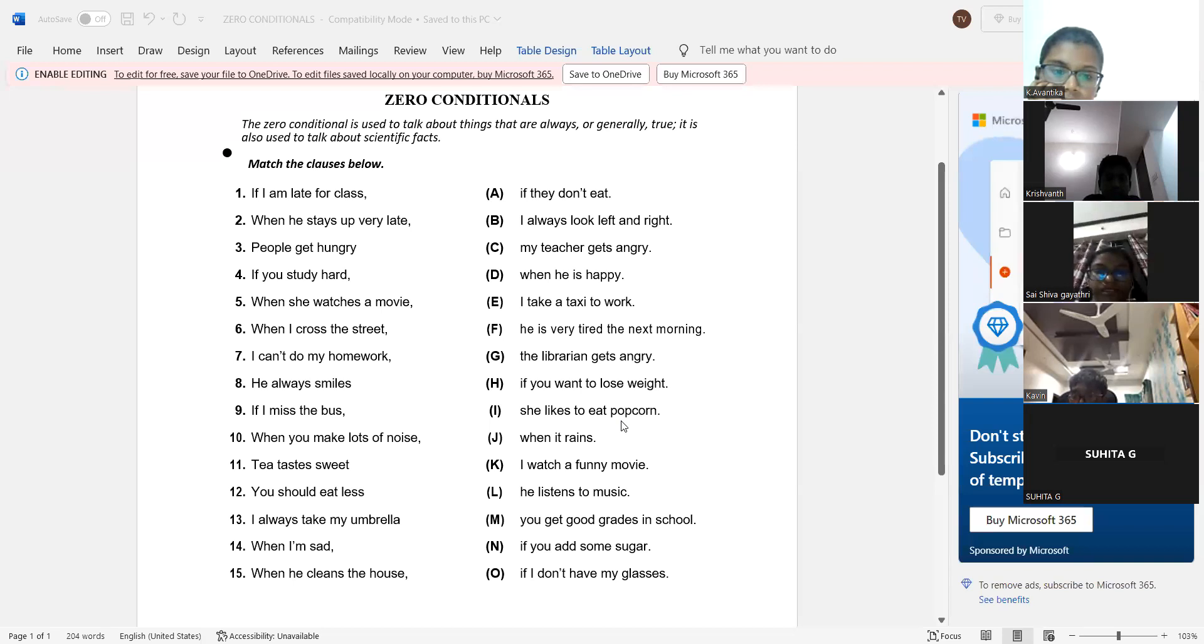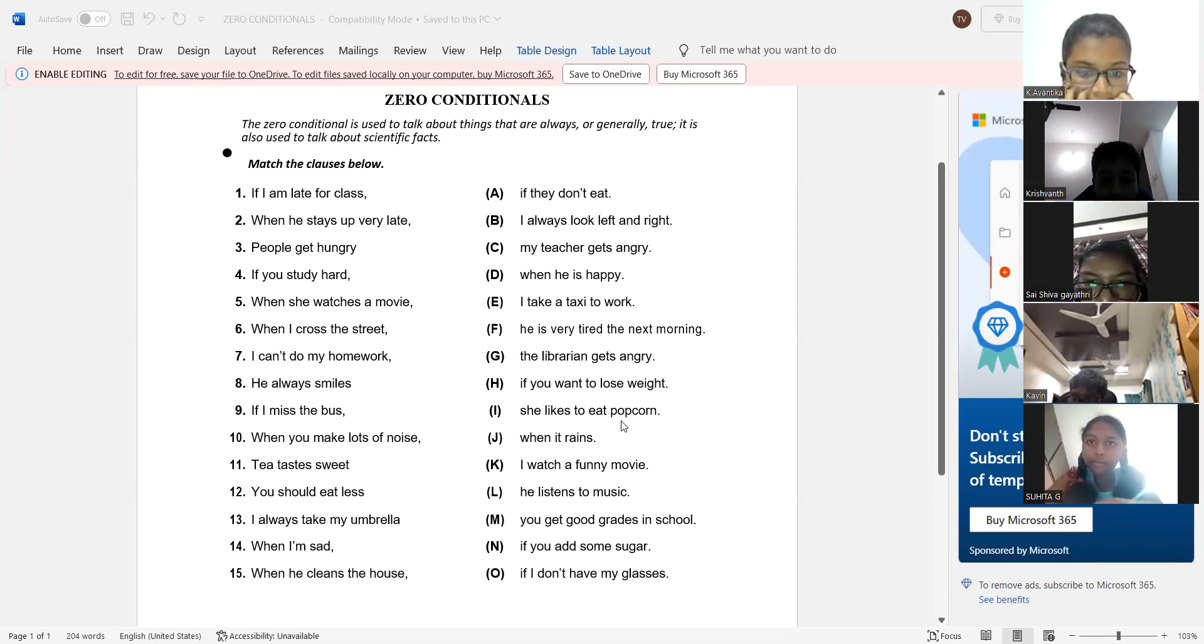And let's do it a little bit quickly here. Sai Sivagayatri. One second. I can't do my homework if I don't have my glasses. Jaita told this. Let's go to Sai. Sai number 8. Yes, sir. He always smiles. Careful. When he is happy. Are you sure? Did you miss something, dear? You must have missed something, Sai. Did you go through all the 15?